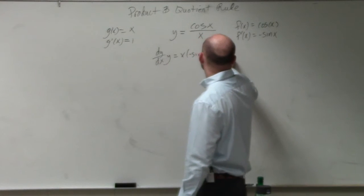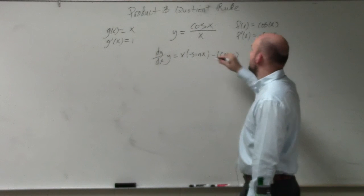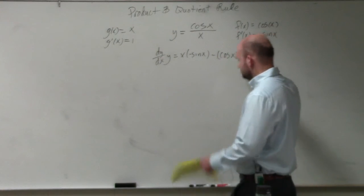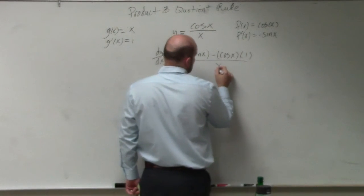And then minus f of x, which is cosine of x, times g prime of x, which is 1. And then that's all over g of x squared.